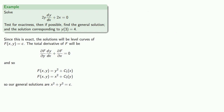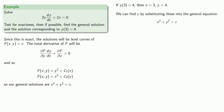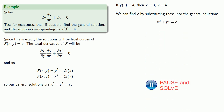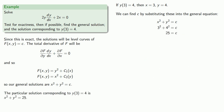We can incorporate initial conditions to find the specific solution. If y(3) equals 4, then x equals 3 and y equals 4, and we find c by substituting into the general equation. So c equals 25, and the particular solution corresponding to our initial condition is x squared plus y squared equals 25.